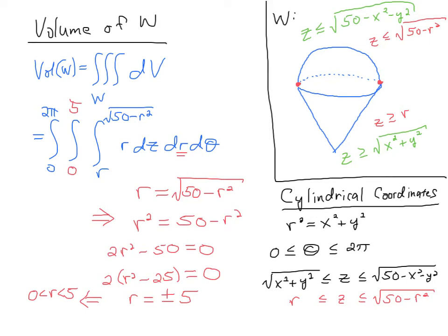So let's set up the algebra for that. So what we have here is I want to look for the point of intersection of the cone and the sphere. So I'll set r, which is the cone, equal to the equation for the sphere, which is the square root of 50 minus r squared. So I set those equal to each other and then I just square both sides, move the minus r squared over to r squared minus 50 equals 0.